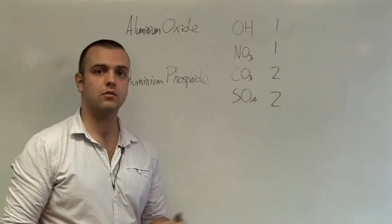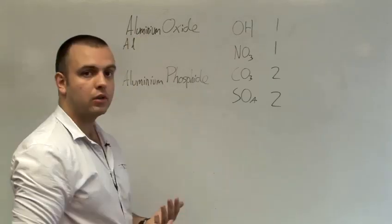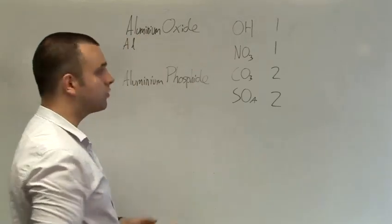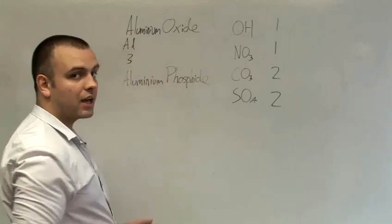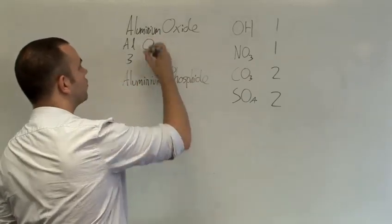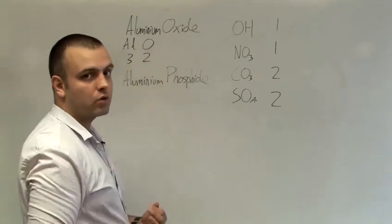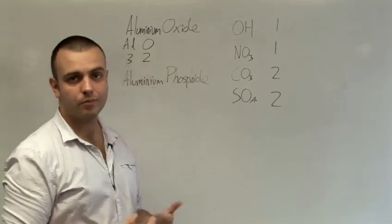For example, aluminium oxide. Aluminium, which we can see from the periodic table, has a valency of 3 as it's in group 3. This means that an aluminium ion has a charge of plus 3. Oxygen is in group 6 which means it has a valency of 2. So an oxide ion has a charge of minus 2.